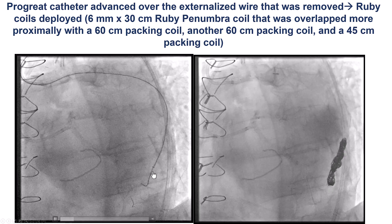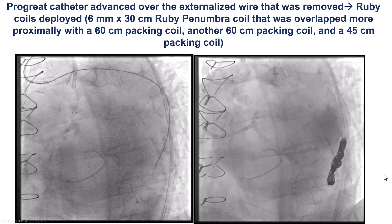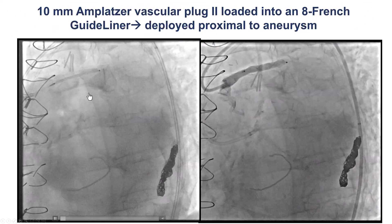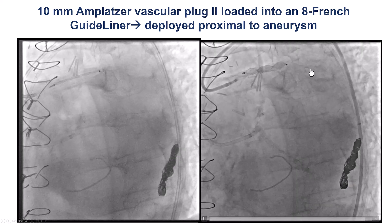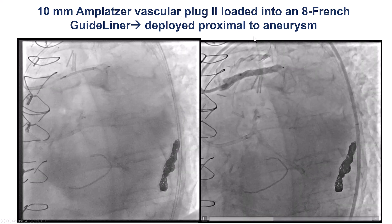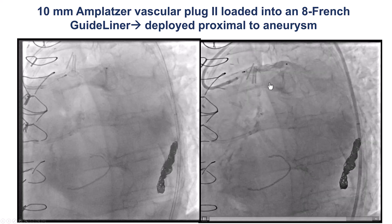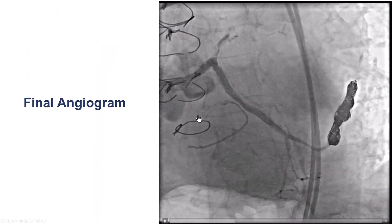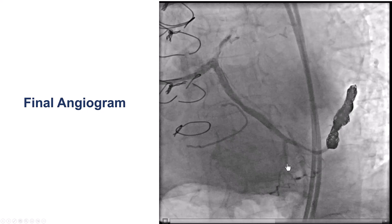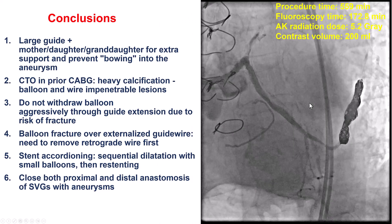Using a prograde microcatheter, we deployed Ruby Penumbra coils followed by several packing coils, achieving a nice distal occlusion. For the proximal segment, we deployed an Amplatzer vascular plug — typically with about 50% oversizing, so a 9 or 10mm plug for a 6mm vessel. That was deployed and successfully stopped flow into the vessel. The final angiogram showed good TIMI-3 antegrade flow into the obtuse marginal branch and successful occlusion of the aneurysmal vein graft.